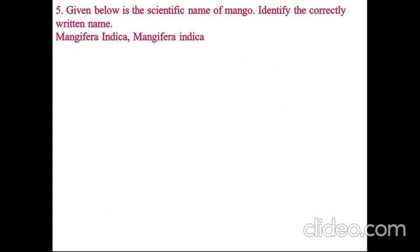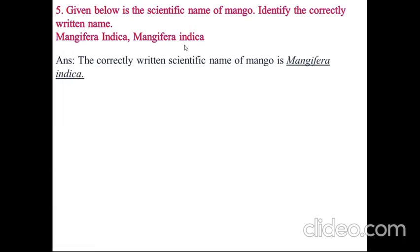Below is the scientific name of mango. Identify the correctly written name: Mangifera indica, with both genus and species name in capital letter, and Mangifera indica, where only the first letter of the species name is in small letter. The correctly written scientific name of mango is Mangifera indica, with species name in small letter, and both the genus and species name separately underlined. This is the rule for writing a scientific name.